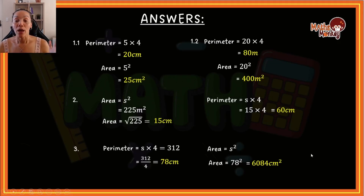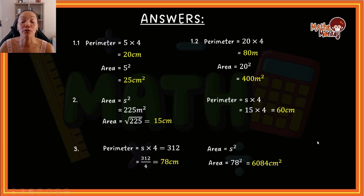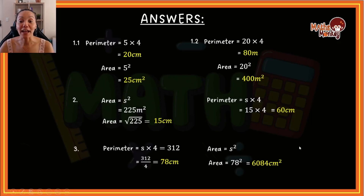Make sure you understand these concepts and pay attention to where you're going wrong so you can fix those mistakes before a test or exam. That concludes our video on area and perimeter for squares. Hopefully you found it helpful — if you did, please give a thumbs up. If you have any questions or recommendations for future videos, add them in the comment section. Thank you so much for watching and I'll see you in the next video. Bye!